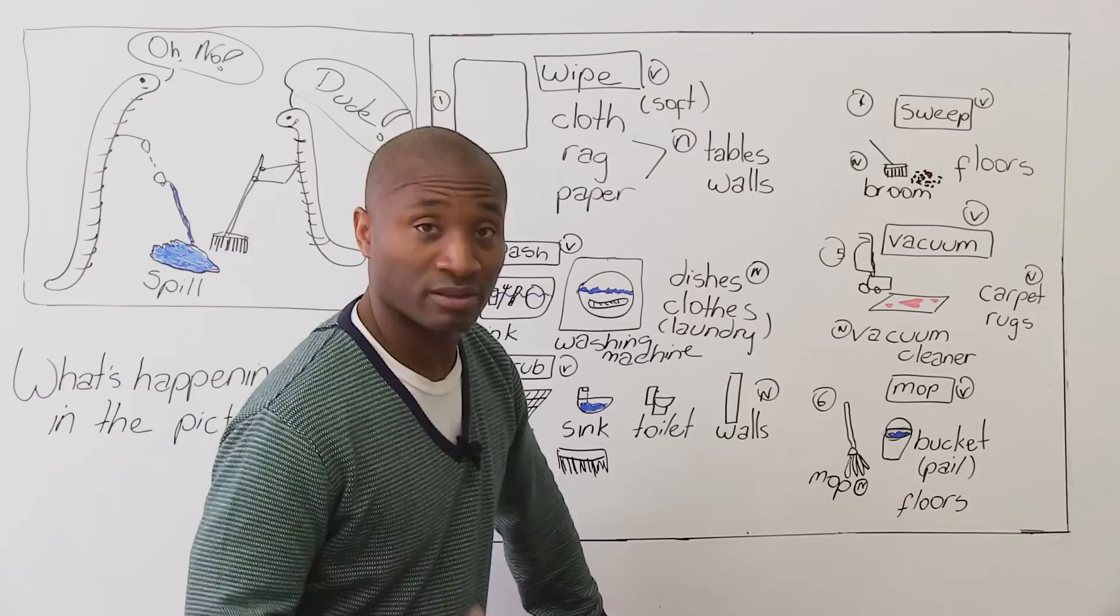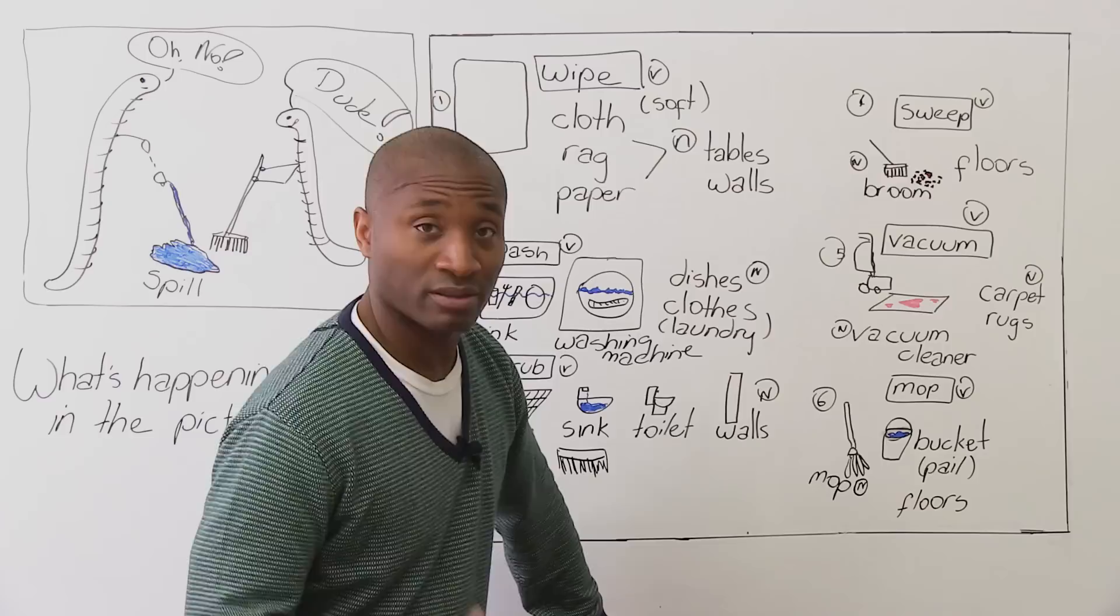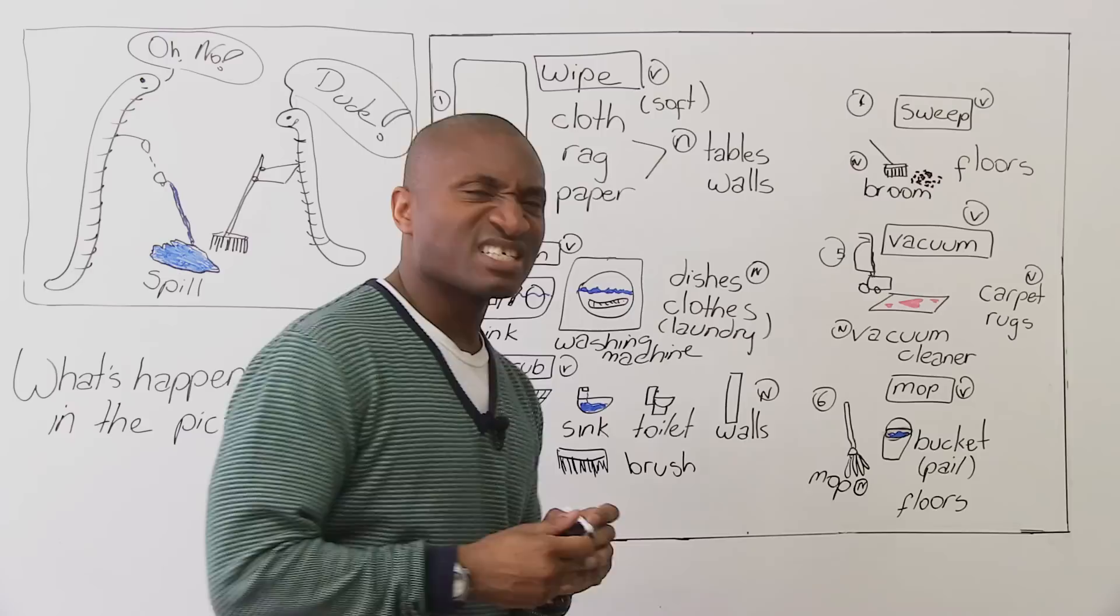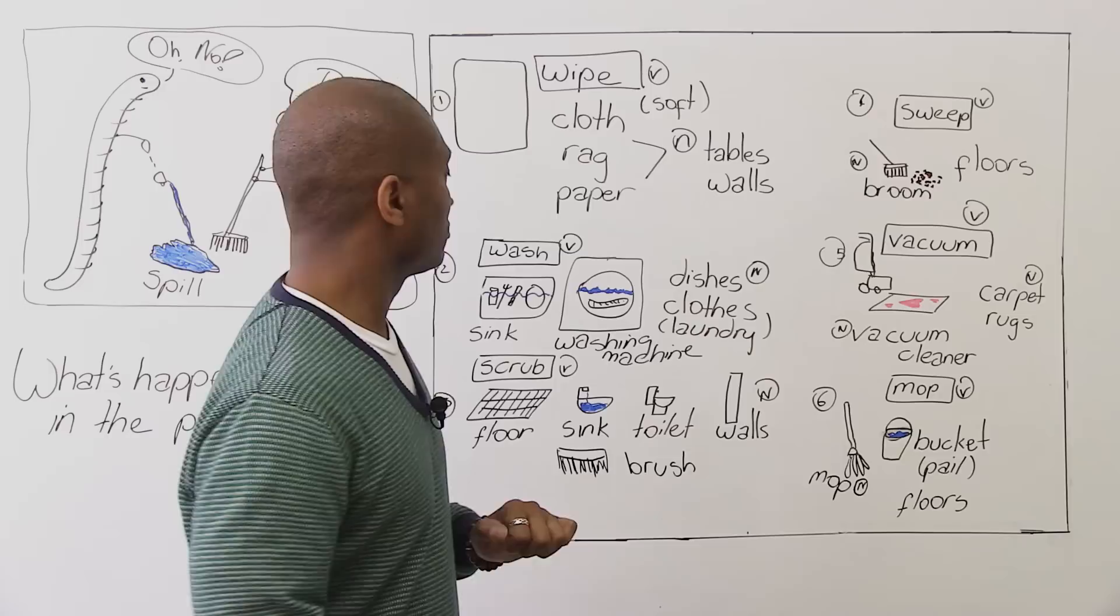And walls. What? Walls get dirty. People throw things. Food goes on the wall, especially if you have babies. It goes up on the wall. You need to scrub it because it goes into the paint. So we've got the verb is to scrub, and we have what do you scrub? Floors, sinks, toilets, and walls. And usually we use a brush. It's similar to what you do to brush your teeth. It's a brush you put in your hands and you scrub. So we've got scrub, wash, wipe. What else can you do in your house?